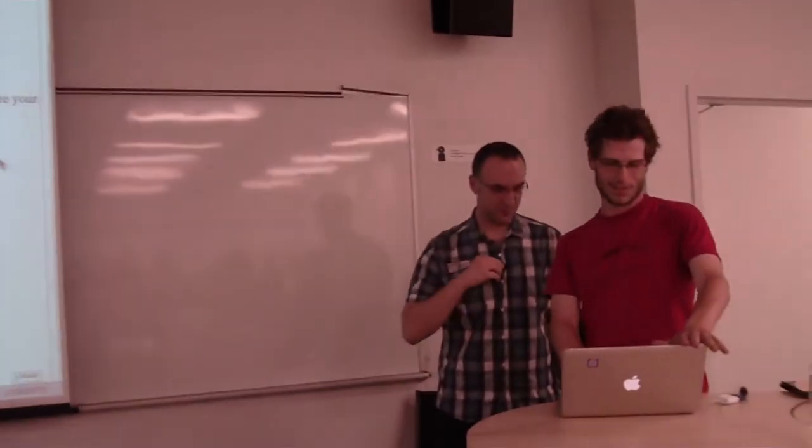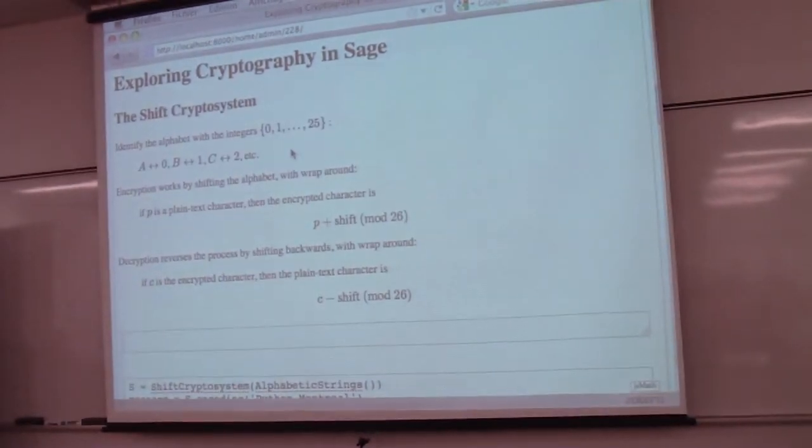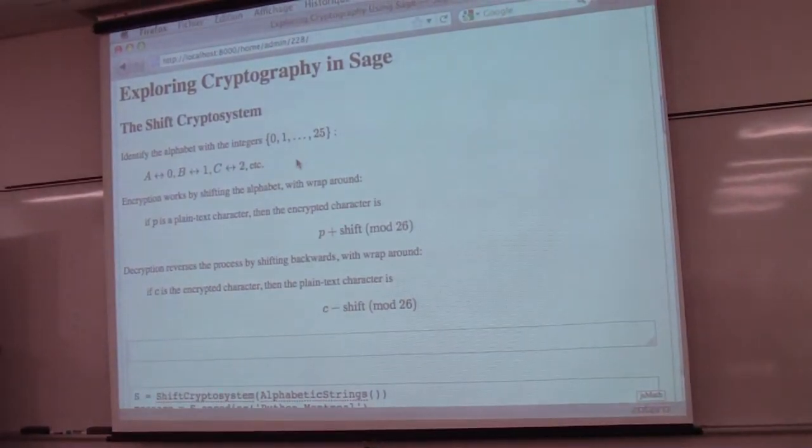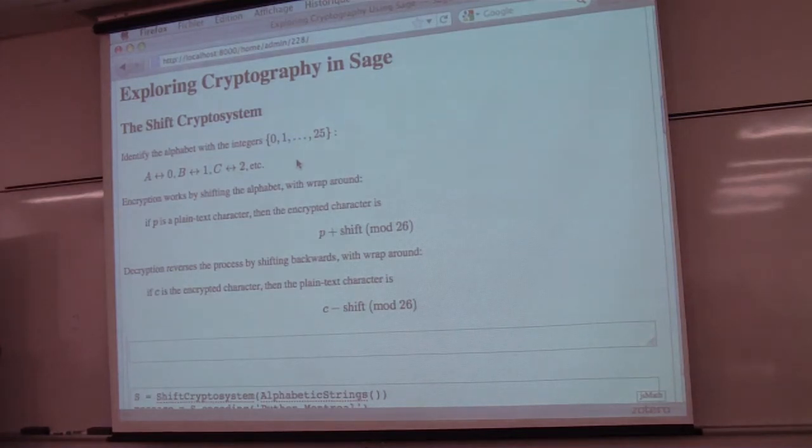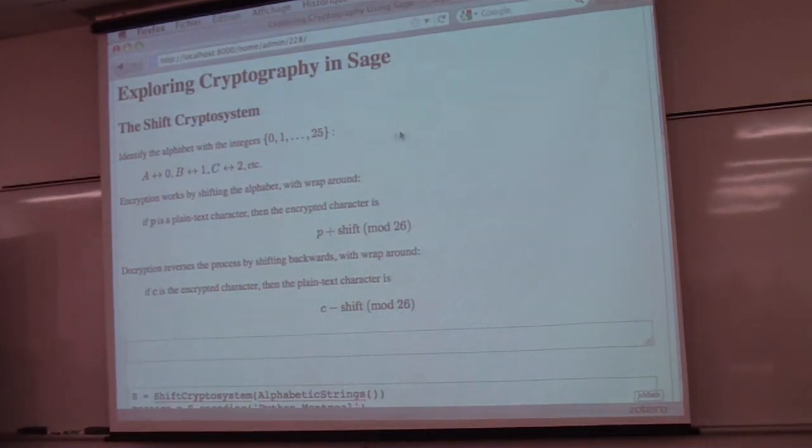Great. Okay. So let's do a first example. So it's an easy example of the first crypto system we learn at school. So take the alphabet from A to Z and represent them with the integer from 0 to 25. So all that I want to show you here is just that we can encode a message and decode with SAGE. It's especially for the beginning of the teaching here.